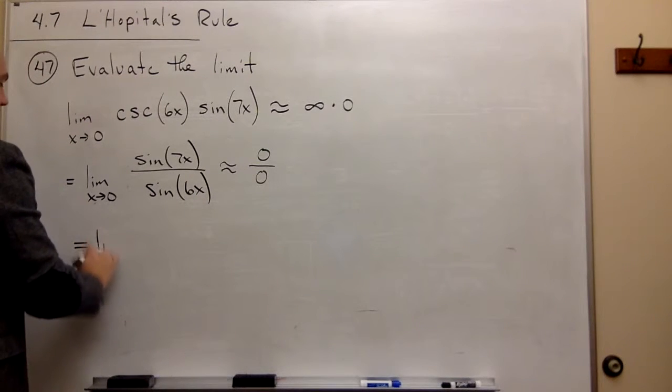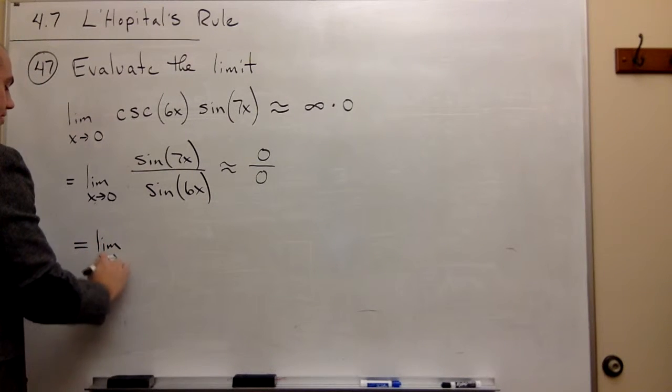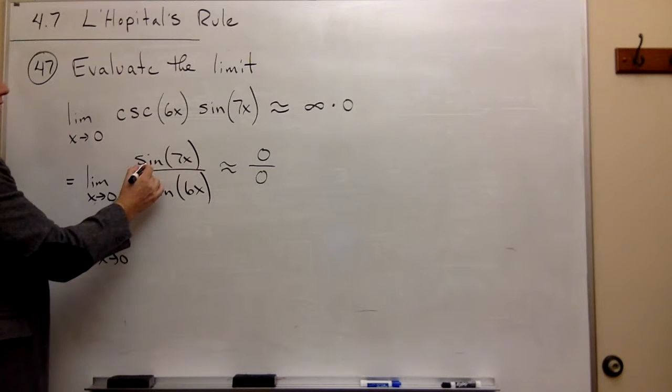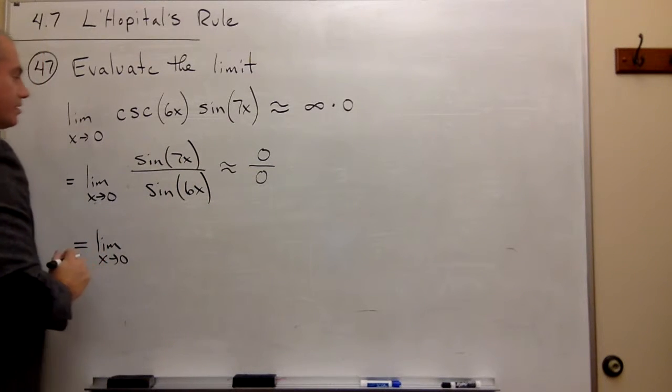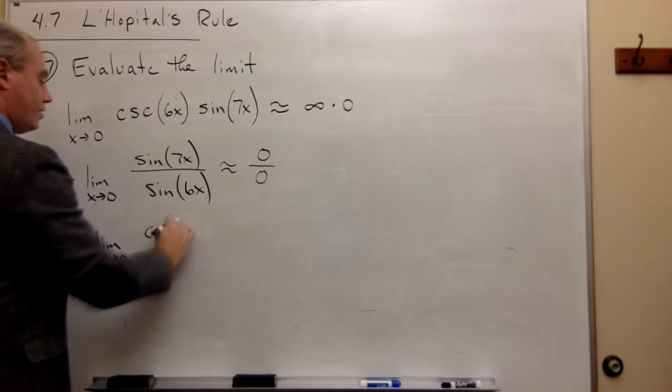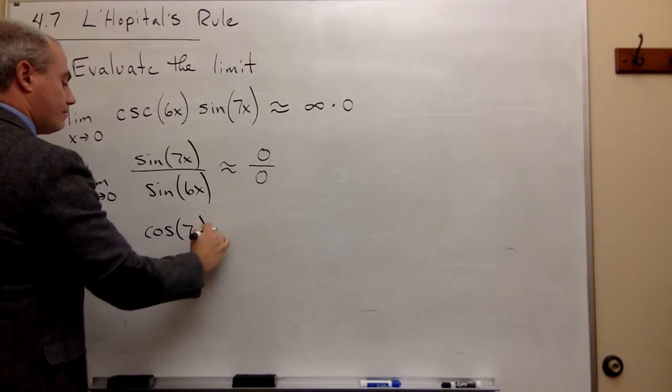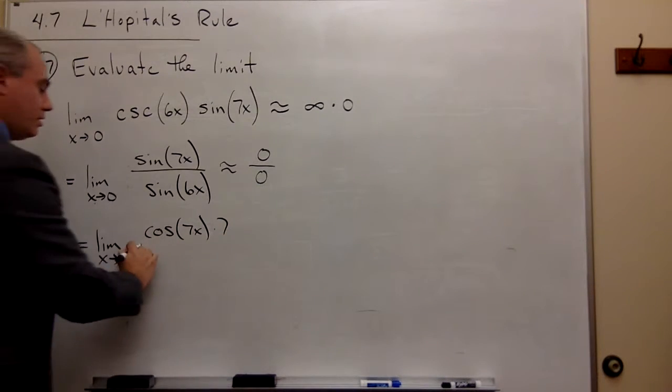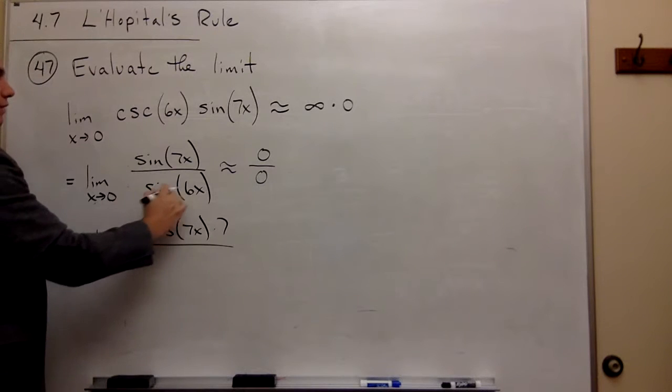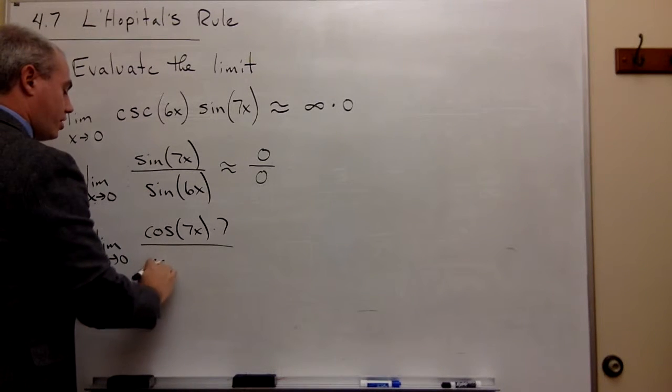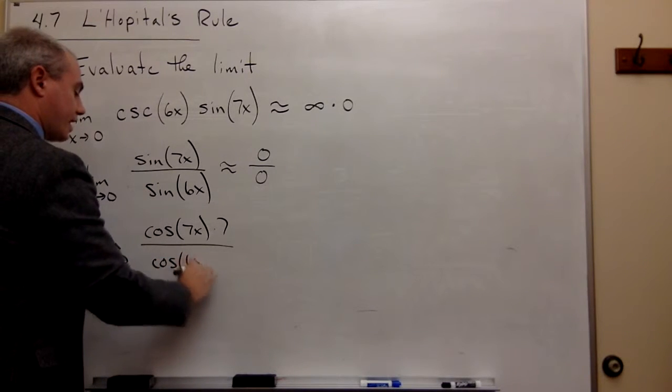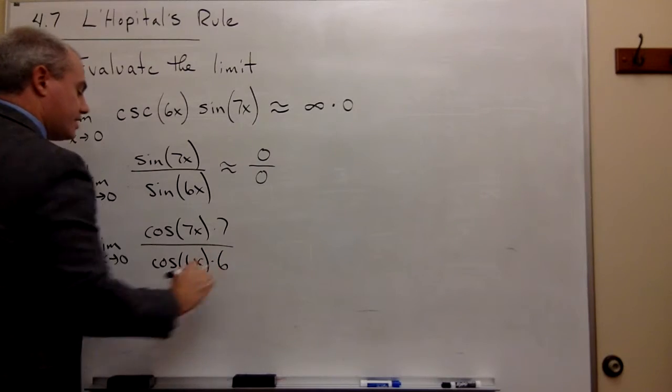So this is equal to the limit as x goes to 0 of the derivative of sine of 7x is cosine of 7x times 7. And on the bottom we have the derivative of sine of 6x which is cosine of 6x times 6.